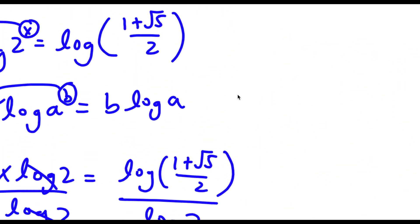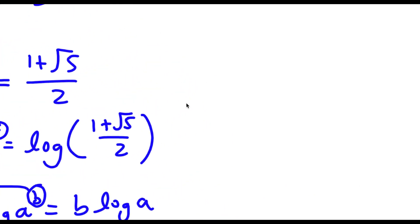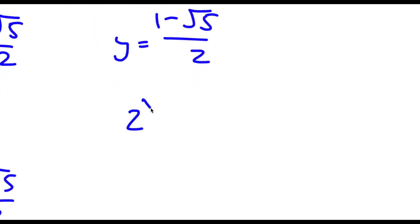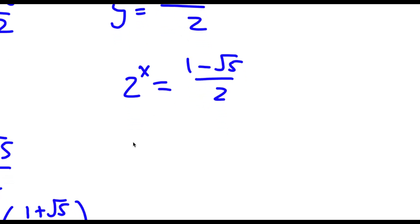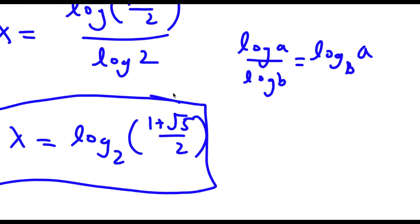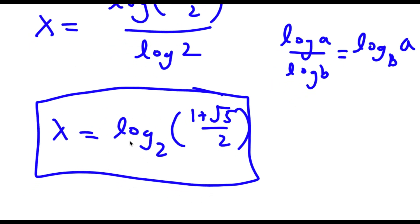Now for the other solution, if y equals 1 minus the square root of 5 over 2, then 2 to the power of x would equal 1 minus the square root of 5 over 2. However, 1 minus the square root of 5 is negative, and you can't raise a positive number to a power and get a negative result. So this has no solution. Our only solution is x equals log base 2 of 1 plus the square root of 5 over 2.